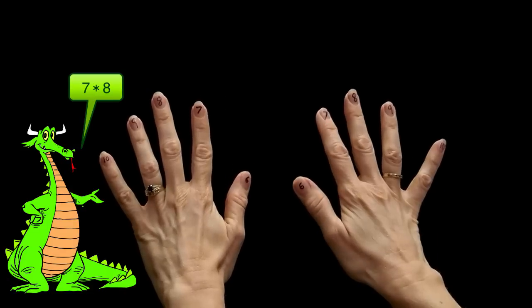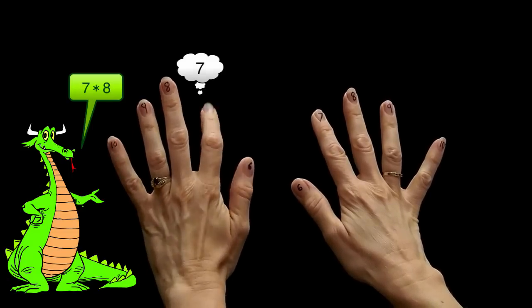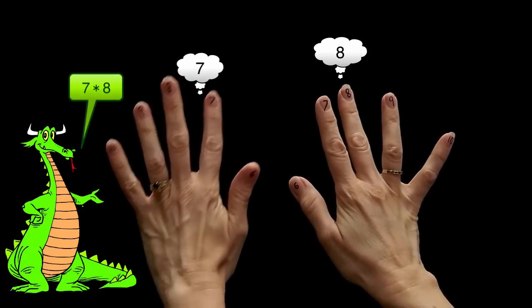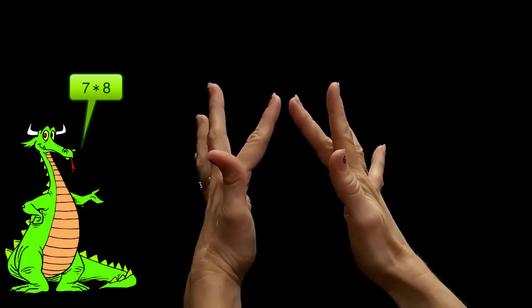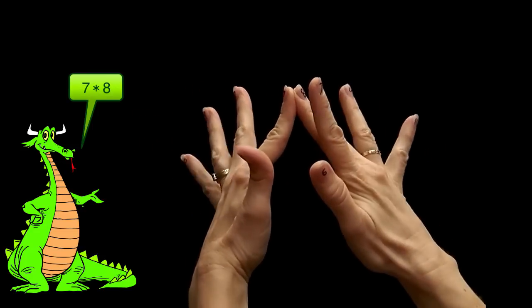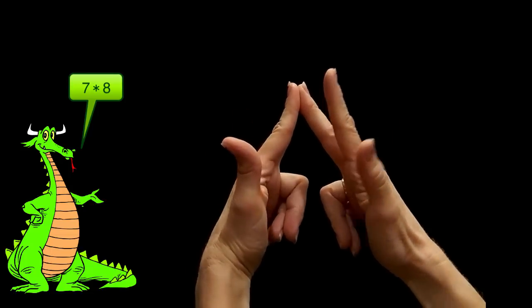So now let's try the problem 7 times 8. I take my 7 finger on one hand and my 8 finger on the other and I touch them together. Then I curl down my fingers up to my pinkies.